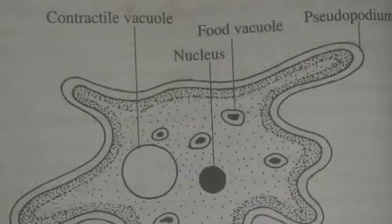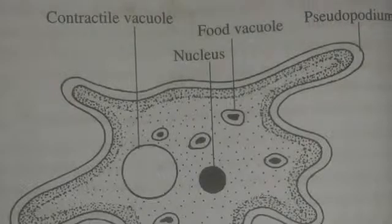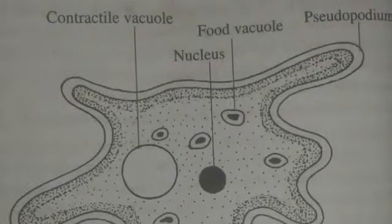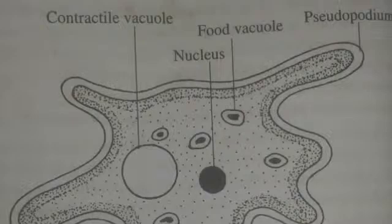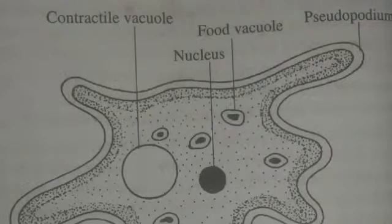The locomotion of amoeba is accomplished by the extended pseudopodia in the direction of movement. Pseudopodia formation involves inward protoplasmic flow. Pseudopodial locomotion is a characteristic of amoeba and hence is called amoeboid movement. The physical mechanism responsible for pseudopodia formation and amoeboid movement is the sol-gel transformation of the protoplasm.